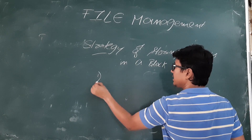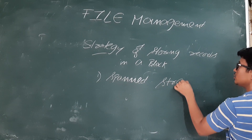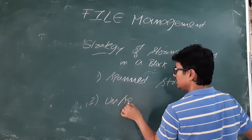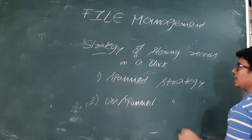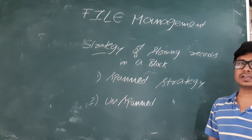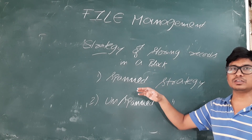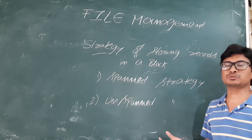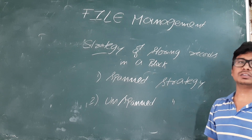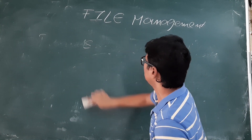We have two strategies for storing records in a block. One is the spanned strategy and the second one is the unspanned strategy. In this video we will discuss what is the spanned strategy, what are its advantages and disadvantages, and similarly what is the unspanned strategy, its advantages and disadvantages. First we will discuss the spanned strategy — how the records will be stored in a block.